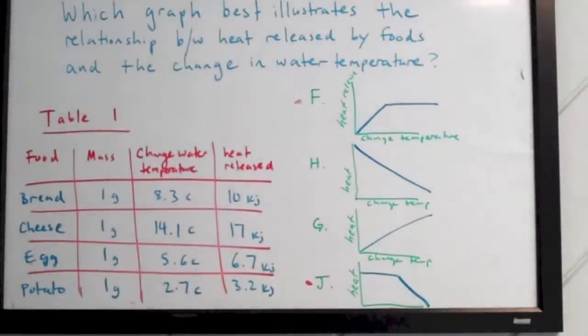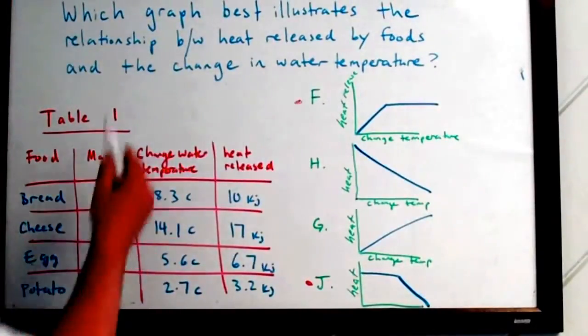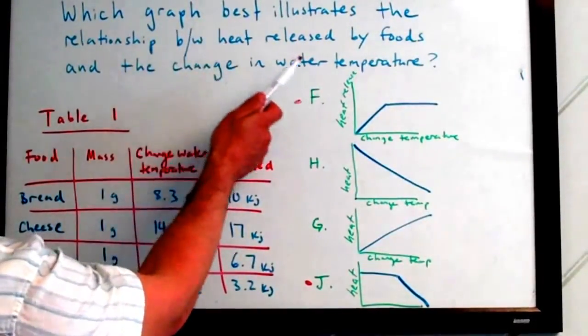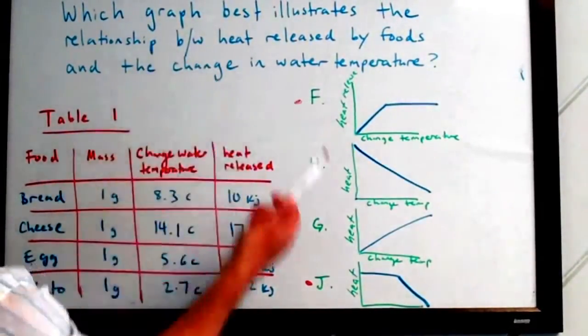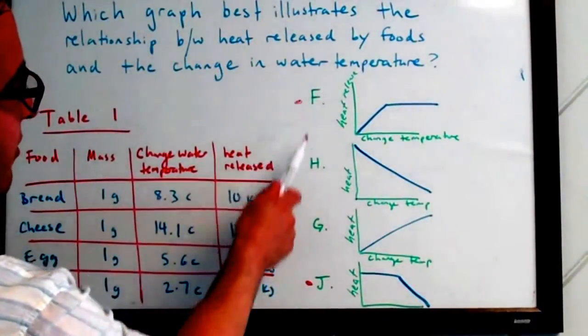Okay, here's a pretty typical data representation ACT science question. Which graph best illustrates the relationship between heat released by foods and the change in water temperature? And here are your 4 graphs.